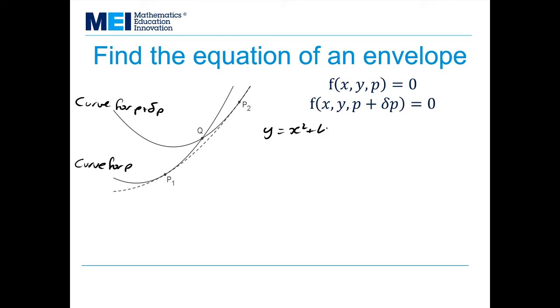So if I was looking at the family y = x² + k, I would rewrite this as y - x² - k = 0. And as a convention, we usually use p as our parameter. So y - x² - p = 0.